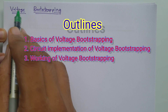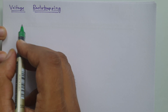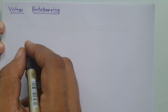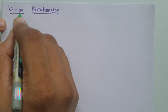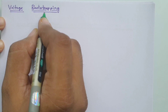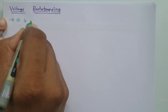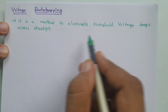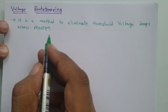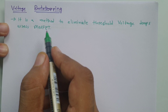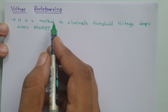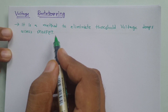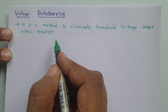First of all, one should know what voltage bootstrapping is. Voltage bootstrapping is a method to eliminate threshold voltage drops across MOSFETs. Our prime agenda is to avoid the threshold voltage drop that happens across a MOSFET. The reason is that output voltage may suffer due to threshold voltage drops in many circuit structures, and that will not allow the output voltage swing from 0 to VDD for logic 0 and logic 1.